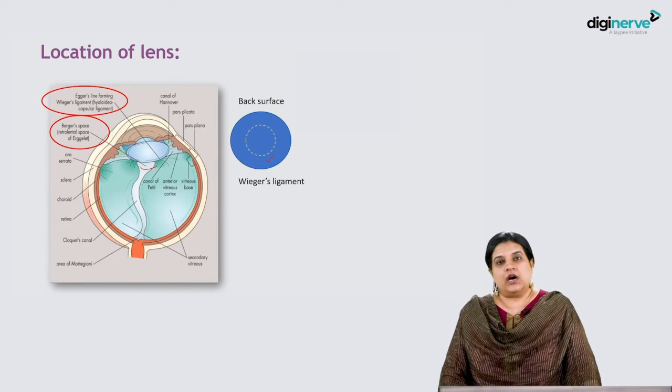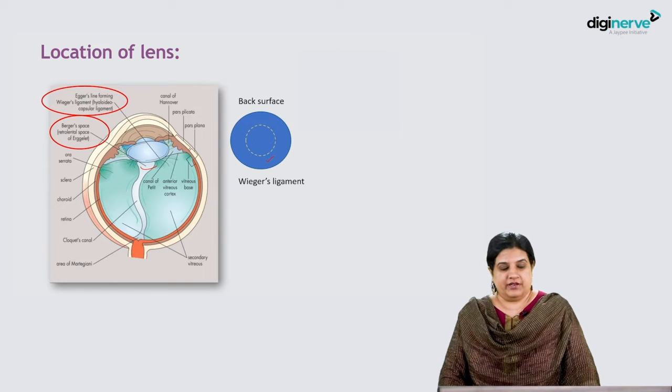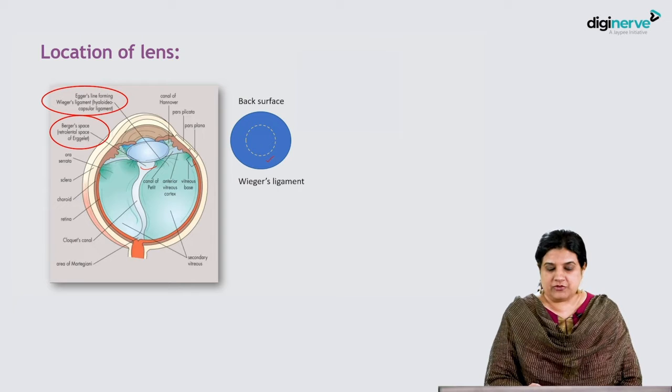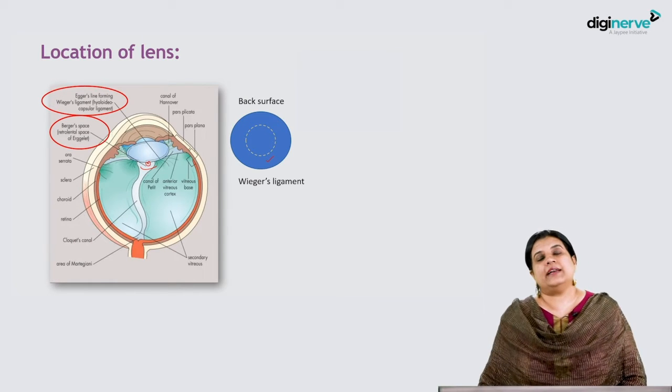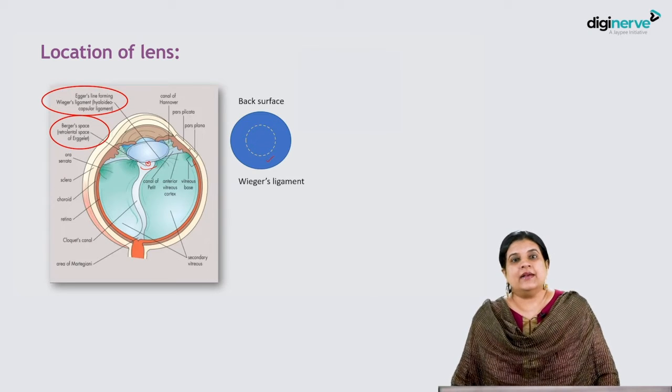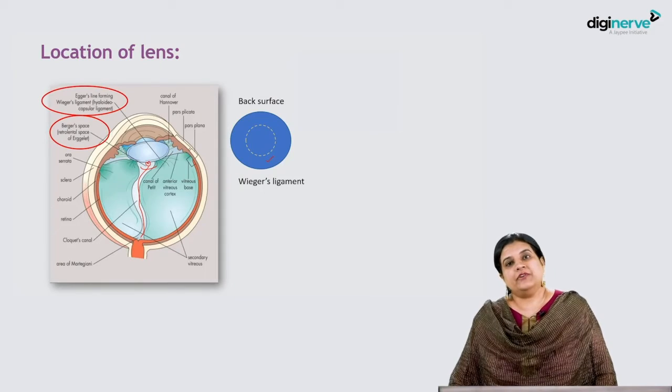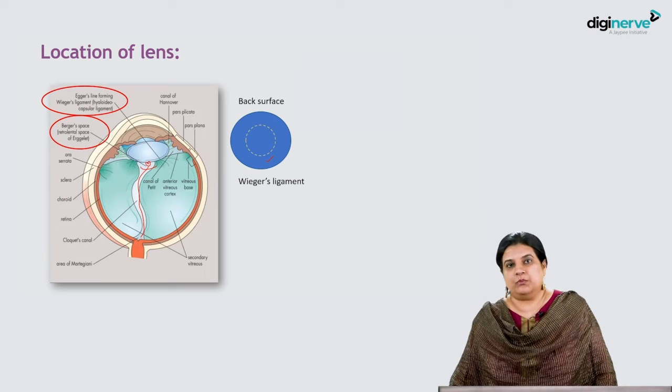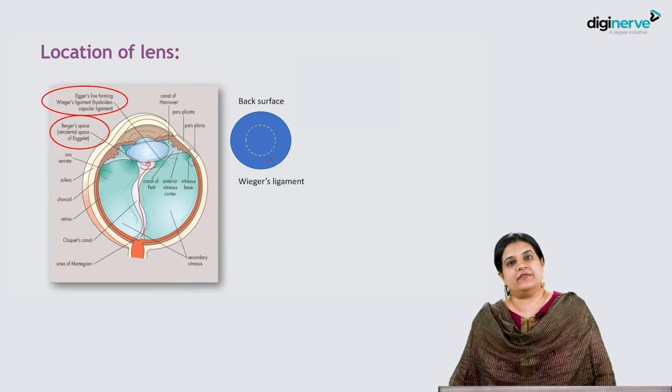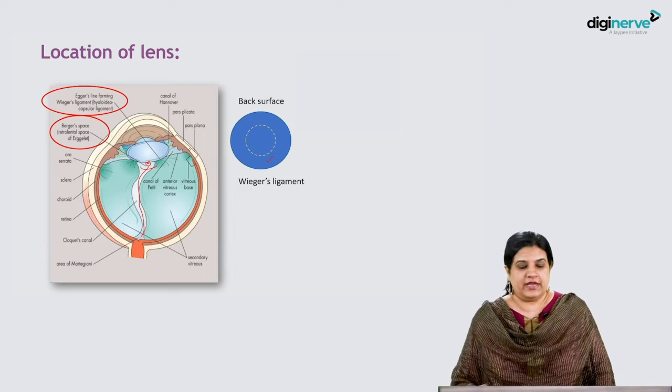There is an artery called the hyaloid artery, attached from gestation till 8 months at the central part of the posterior surface of the lens. It passes through Cloquet's canal. After 8 months of gestation, both Cloquet's canal and the hyaloid artery disappear. Sometimes we may have a remnant in the form of a Mittendorf dot.